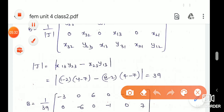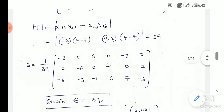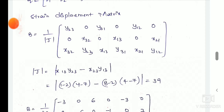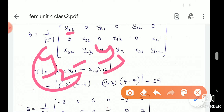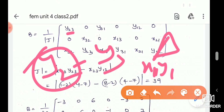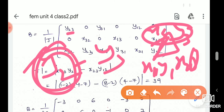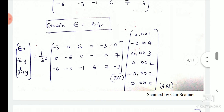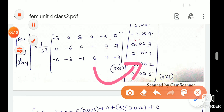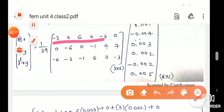So B is the strain-displacement matrix, as I already said in the last class. We will find out that B is y23, which is y2 minus y3. Y2 has coordinates in the triangular element: x1, y1, x2, y2. So here y2 and y3. Third coordinates represent x3, y3. So we will find out that matrix form. B into Q: here B is 3 by 6 and Q is 6 by 1 — two rows into column, first row into second column.